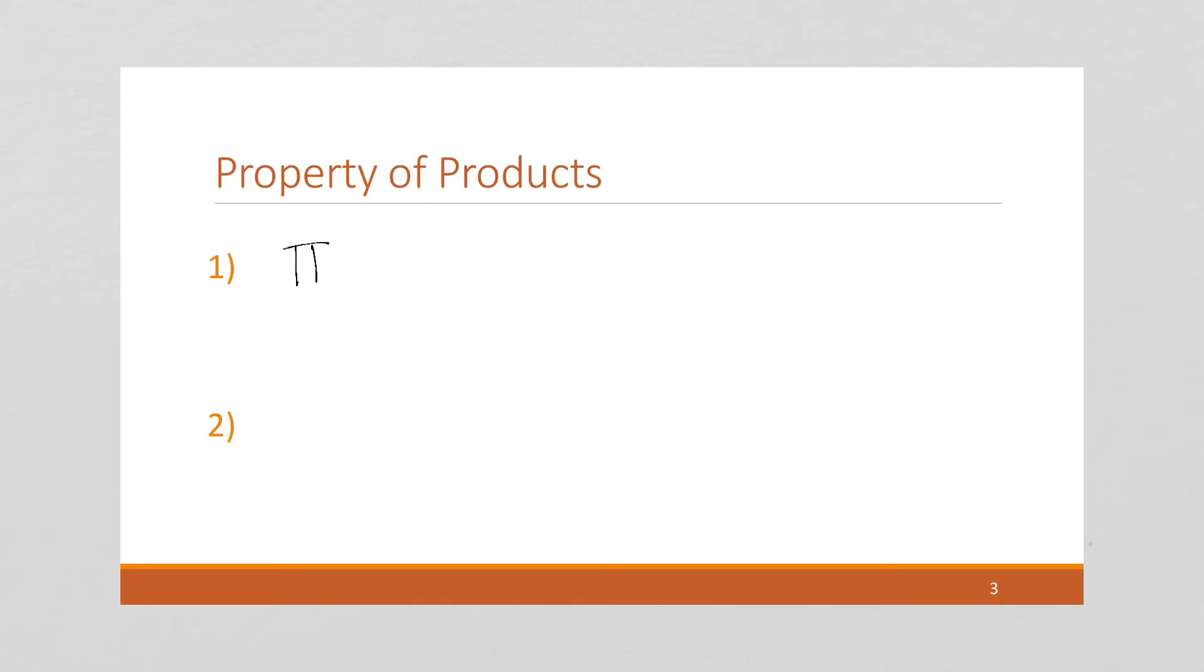So, if I take a product of k equals m to n, and I multiply it by another product, as long as the bounds are the same, we can just suck it all into one product.